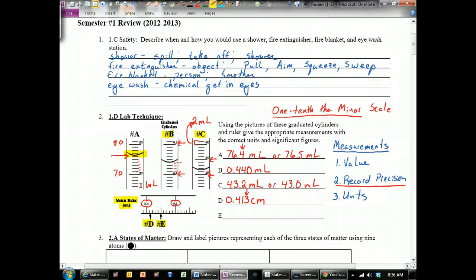E is, again, right at a mark. So we need to communicate how precise we know this. So it's right at the 5 mark. So it's 0.4 and then 0.45, and it's right at it. That's why we add the 0 to communicate that it's right on.